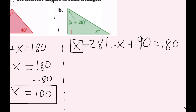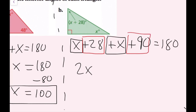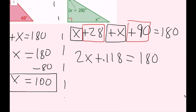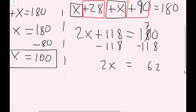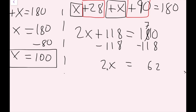I'll circle my like terms — always include the sign to the left when boxing or circling terms. x plus x is 2x. Then positive 28 plus 90 gives me positive 118, equal to 180. I need to get rid of the non-x term, so I subtract 118 on both sides. I get 2x equals 62. The last step is to divide both sides by 2 to cancel out the multiplication, and I get x equals 31.